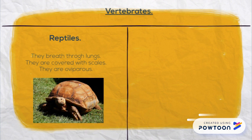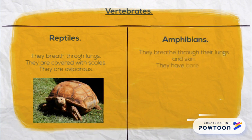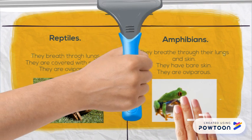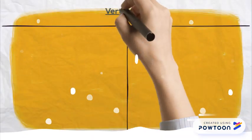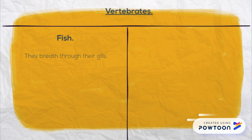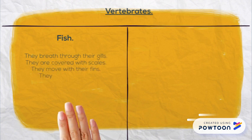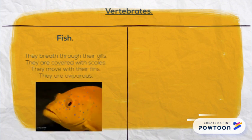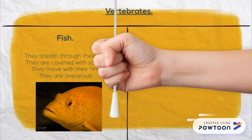Amphibians — they breathe through their lungs and skin, they have bare skin, and they are oviparous. And finally, fish — they breathe through their gills, they are covered with scales, they move with their fins, and they are oviparous.